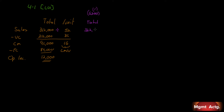6,200 units times $52 gives us sales of $322,400. Our variable cost per unit stays the same, so variable costs are $223,200, leaving a contribution margin of $99,200. Fixed costs remain constant at $84,000, giving us a net income of $15,200. That's scenario one done.